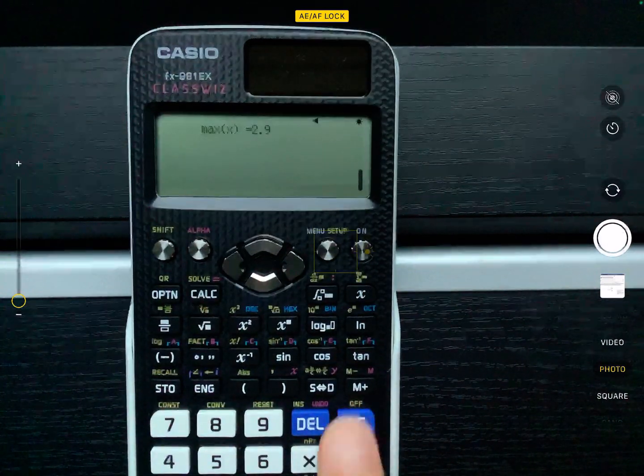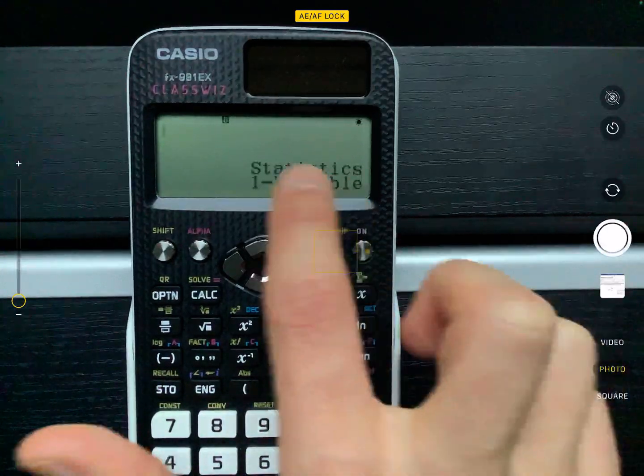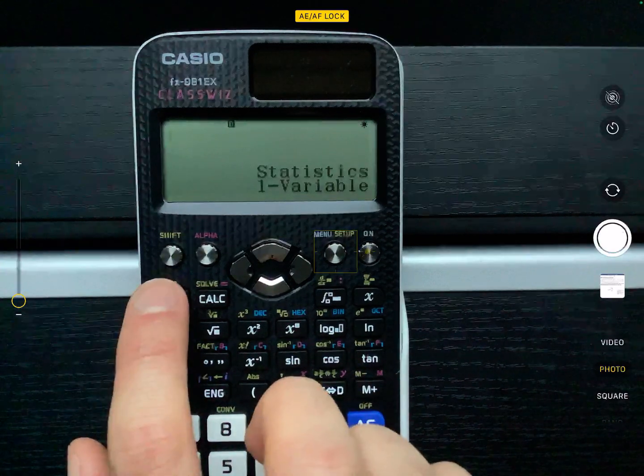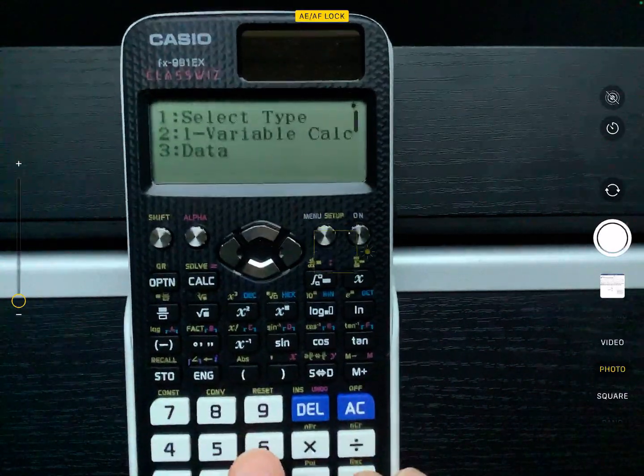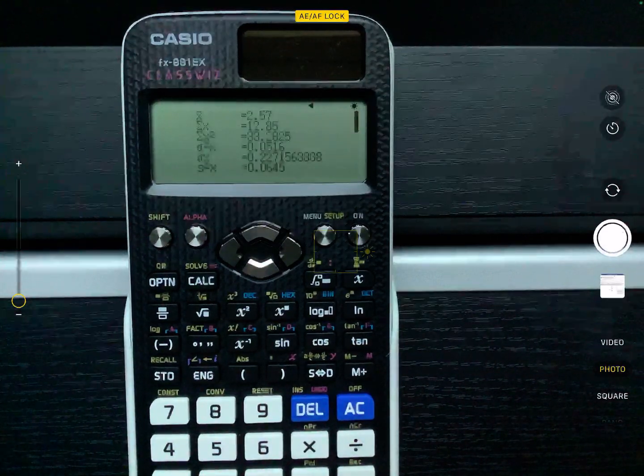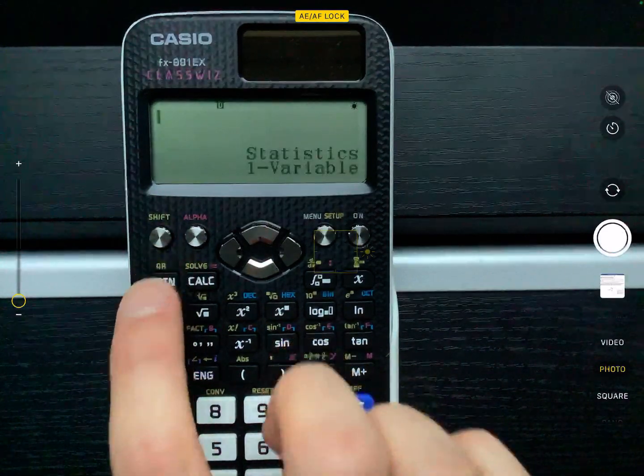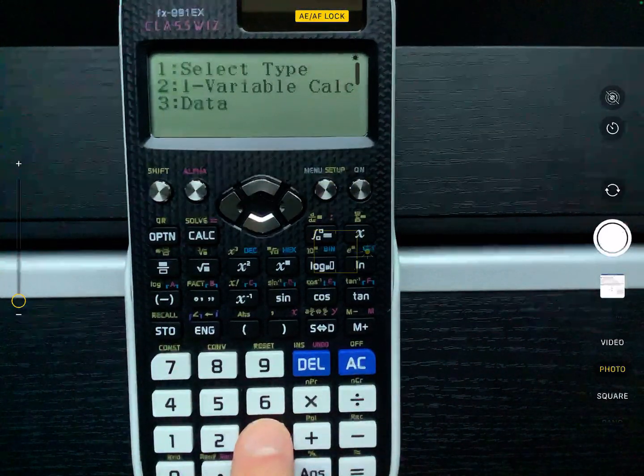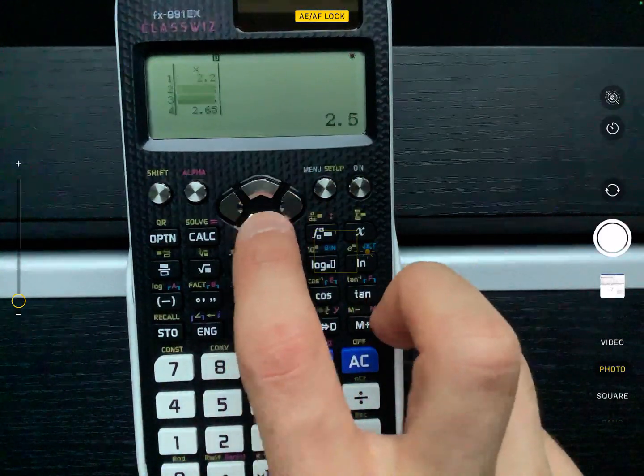And then if you want to just go back, you just press AC. So you can see that you're in statistics mode and there is one variable here. I'm just going to show you again what you do. So you press option and then you want to press number two for the one variable calculator. If you put in a piece of data wrong, you press options and then you press number three to go to data.